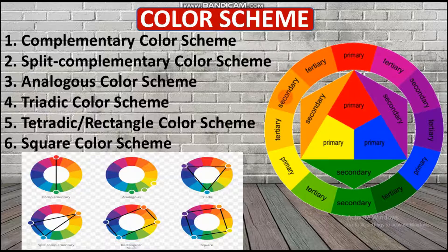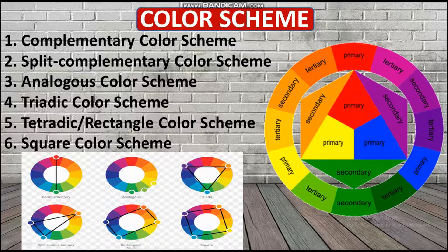The second is the split complementary color scheme, which is better than the complementary scheme because it uses three colors instead of two. If you don't want to use high-contrast colors, you can use split complementary. You select a base color — say red — then instead of taking directly opposite green, you take the two colors adjacent to green on either side. You can see this in the picture.